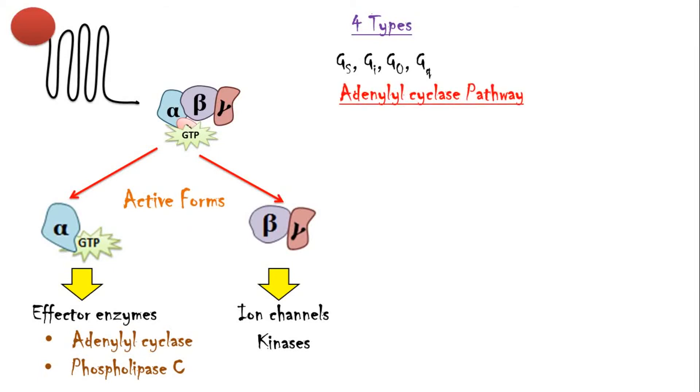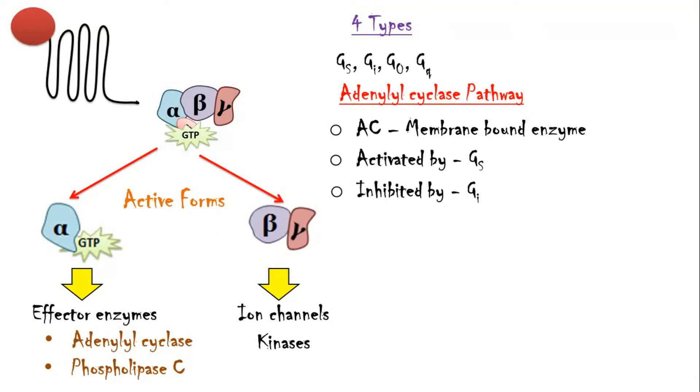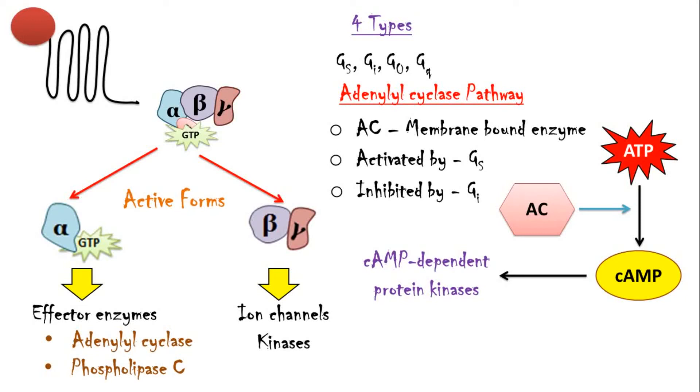Now let's discuss a bit about the adenyl cyclase pathway. Adenyl cyclase is a membrane-bound enzyme which is activated by G-stimulatory proteins and inhibited by G-inhibitory proteins. When activated, it catalyzes the conversion of ATP into cyclic AMP. Cyclic AMP activates cAMP-dependent protein kinases and these kinases cause phosphorylation of certain enzymes according to the agonist molecule which bound to the receptor.